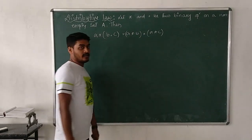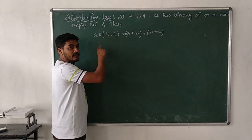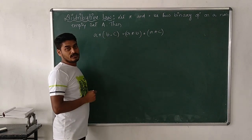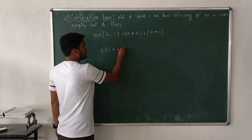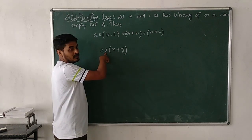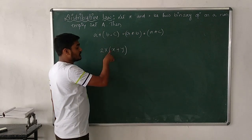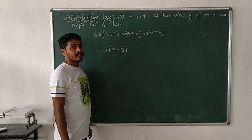In previous classes — class 6, 7, or 8 — you already got the idea about the distributive property of two operations. So what does the distributive property mean, and under what condition can we apply it? Remember: if the operation inside the bracket and the operation outside the bracket are different, then and only then can you apply the distributive property. For example, consider 2 × (x + y). The operation inside the bracket is addition and outside is multiplication.